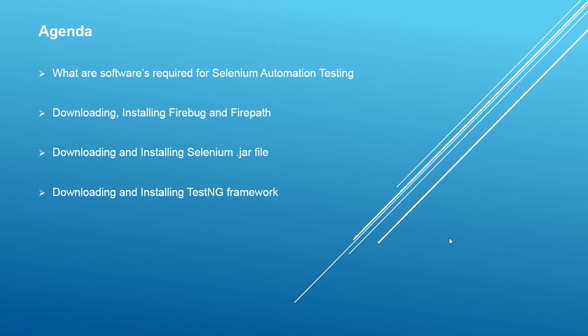The software required for Selenium automation testing: first, Java should be installed; second, Eclipse IDE should be installed; third, Firebug or Firepath should be installed in your system; fourth, you have to download the Selenium jar files; and fifth, the TestNG framework should be installed.